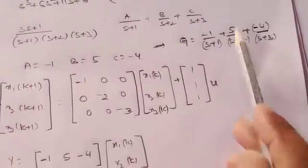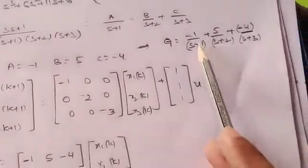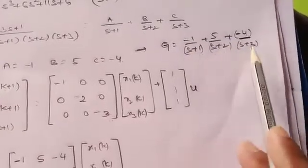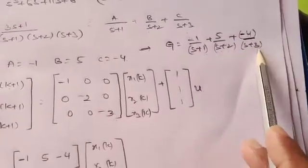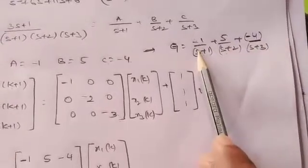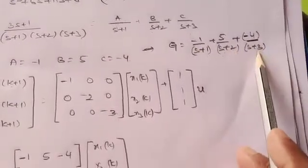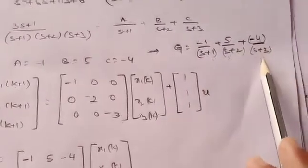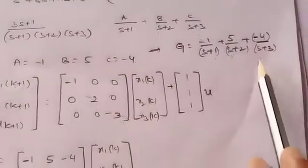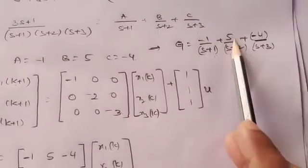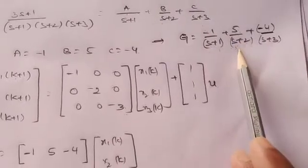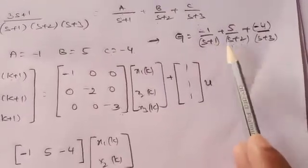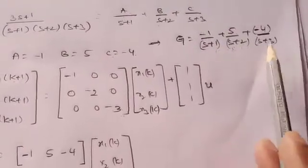The denominators (s+1), (s+2), and (s+3) are called poles. So s = −1 is one pole, s = −2 is one pole, and s = −3 is one pole. The denominator denotes poles and the numerator denotes zeros. All three poles — s = −1, s = −2, s = −3 — are distinct; there are no repeated poles.